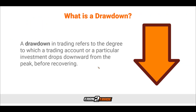A drawdown in trading refers to the degree to which your trading account or a particular investment drops from its peak at the point of time that we had it, before recovering. Basically, it is the farthest distance against our position that the price is willing to travel while we are holding it. The drawdown is calculated as a percentage between the peak and the following trough. However, in the case of a traded account value, the drawdown can also be recorded as a dollar sum.